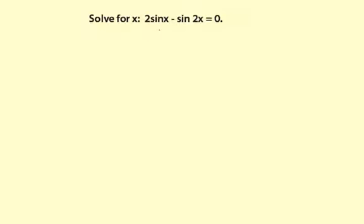Solve for x: 2 sine of x minus sine of 2x equals 0.